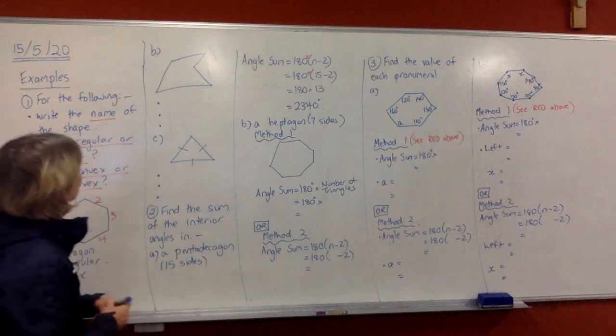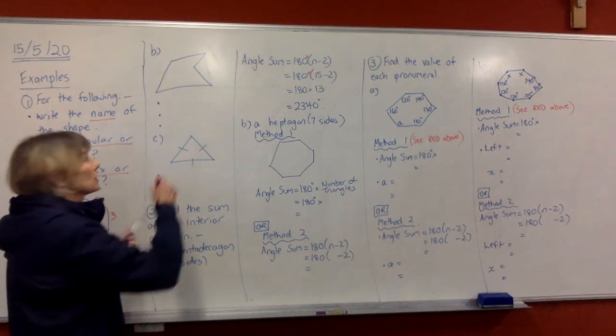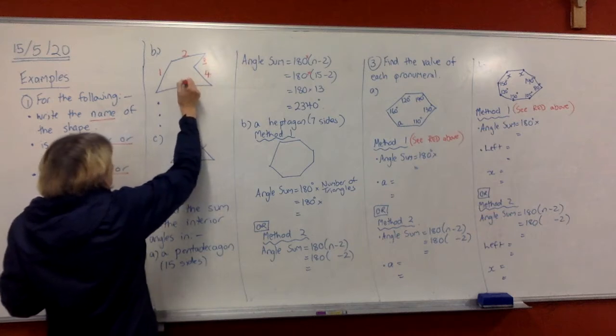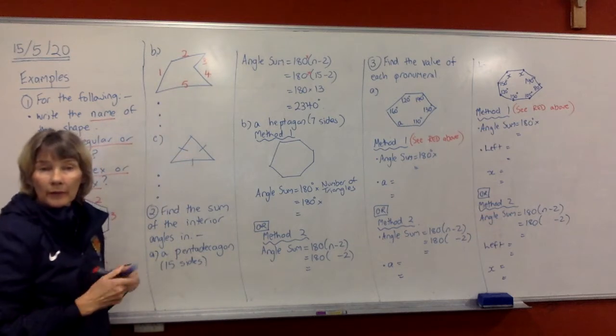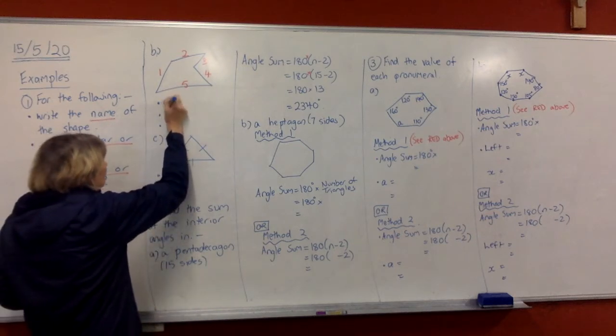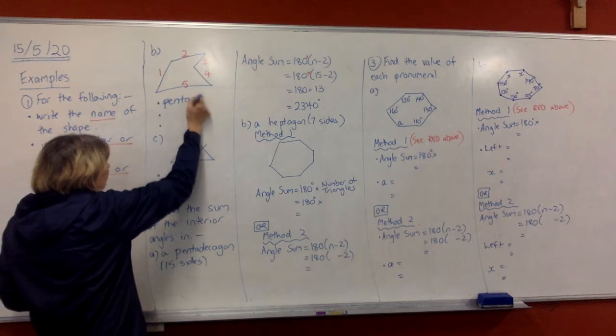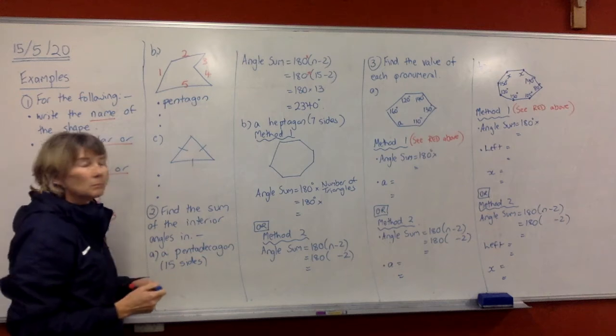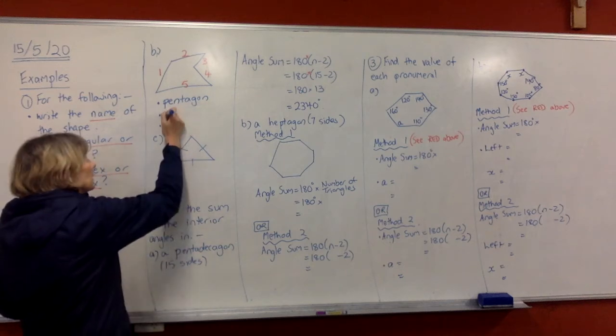Okay, the next one. Looking at this shape, count the sides. There's five sides. If it's got five sides, it's a pentagon. Now, is it regular or irregular? Are all those sides equal? No, they're not, so it's irregular.